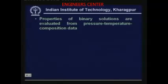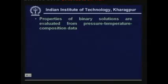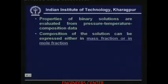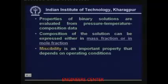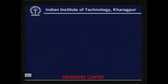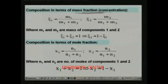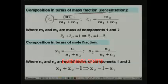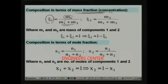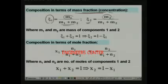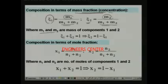Properties of binary solutions are evaluated from pressure-temperature-composition data, so to find the properties you have to specify pressure, temperature, and composition. Composition of the solution can be expressed either in mass fraction or in mole fraction. Mass fraction — also sometimes called concentration — of component 1 is defined as the mass of that component divided by the total mass of the solution: m1 divided by m1 plus m2. Similarly, mass fraction of component 2 is m2 divided by the total mass m1 plus m2.